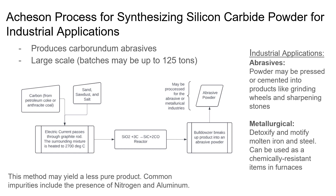Another way the abrasive powder may be used is to detoxify and modify molten iron and steel. A potential downfall of this process is the yield of impure product — common impurities include nitrogen and aluminum. Nonetheless, this process is widely used because of its large-scale production, with batches up to 125 tons.